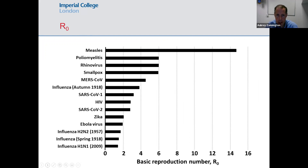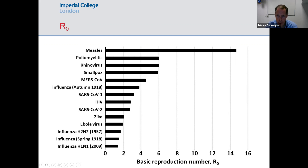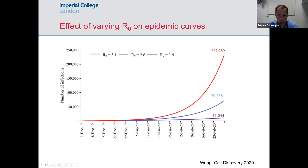The most infectious disease we really know of is measles, with a very high R0. A lot of people are surprised to see that Ebola virus only has an R0 between one and two — we'll come back to that in a minute.